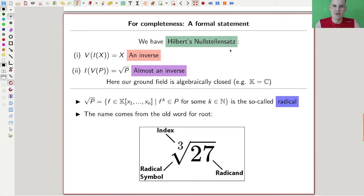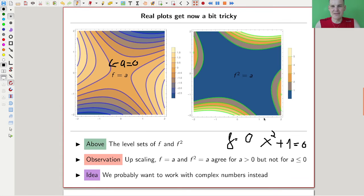One direction it works out: V(I(X)) equals X. The other direction almost works out because we are kind of blind towards the multiplicities of a polynomial. We always kind of pick out the biggest ideal, which is called a radical ideal.